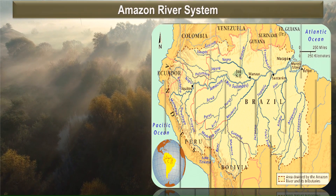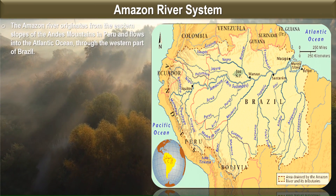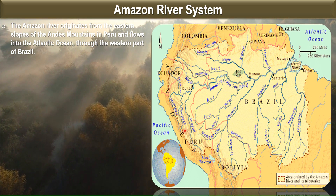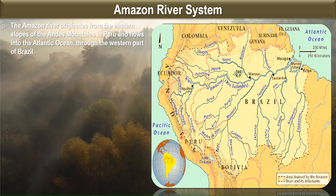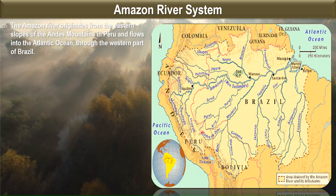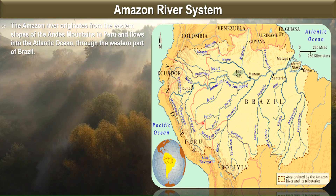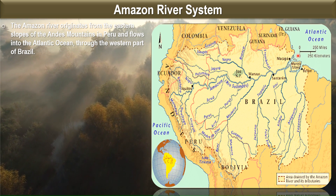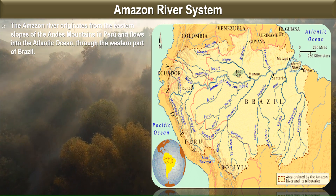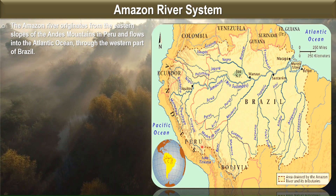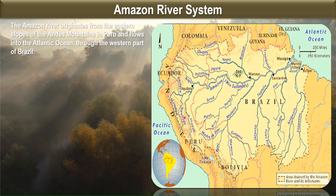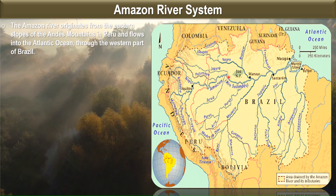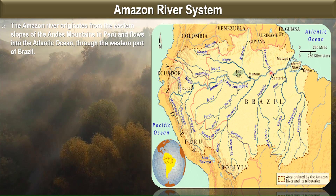We will now study the Amazon River System. The Amazon River originates from the eastern slopes of the Andes Mountains in Peru, which lies to the west of Brazil and is one of its neighboring countries. It enters the western part of Brazil and then flows into the Atlantic Ocean.